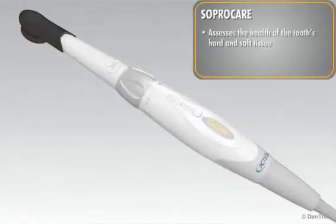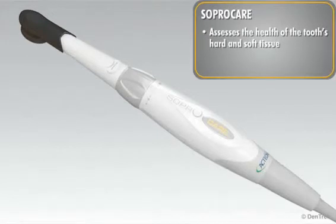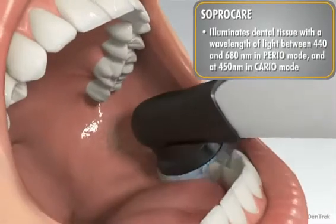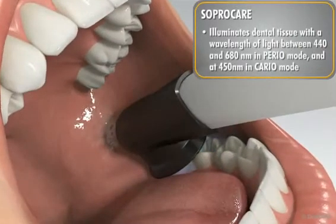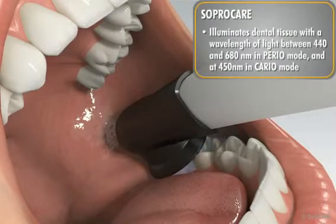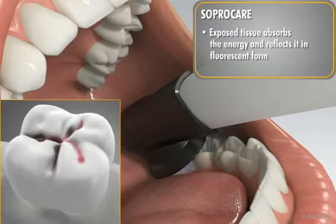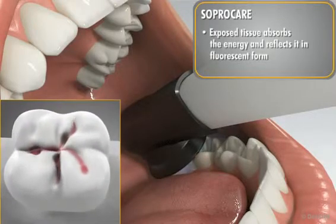SoproCare assesses the health of the tooth's hard tissue as well as the soft tissue that surrounds it. It illuminates dental tissue with a specific wavelength of light — between 440 and 680 nanometers in perio mode and at 450 nanometers in cario mode. The exposed tissue absorbs the energy and reflects it in fluorescent form.